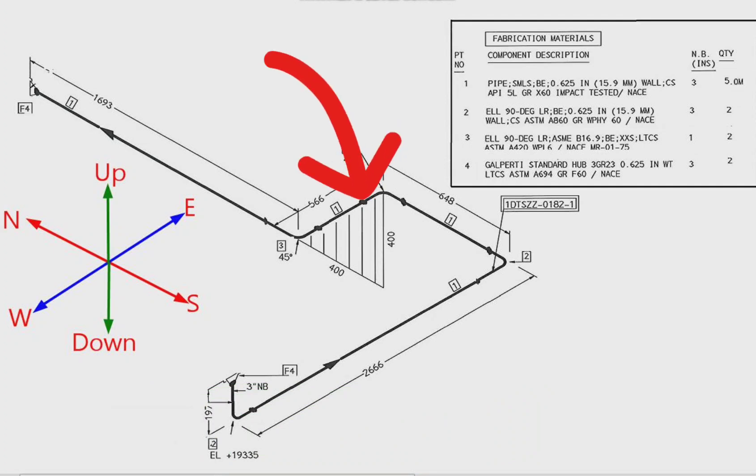This is the pipe isometric drawing. Every pipe drawing has such a sketch. This indicates the directions.